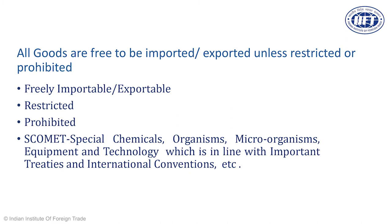In the overall scheme of things, in principle all goods are free to be imported and exported unless they are restricted or prohibited. In India we currently have more than 11,000 HS codes and items, and only a few are under the restricted category and a few under the prohibited category. Restricted items are those for which import and export can be done but only with an authorization required to be taken from the DGFT. Prohibited items are completely prohibited and cannot be imported or exported even through an authorization.